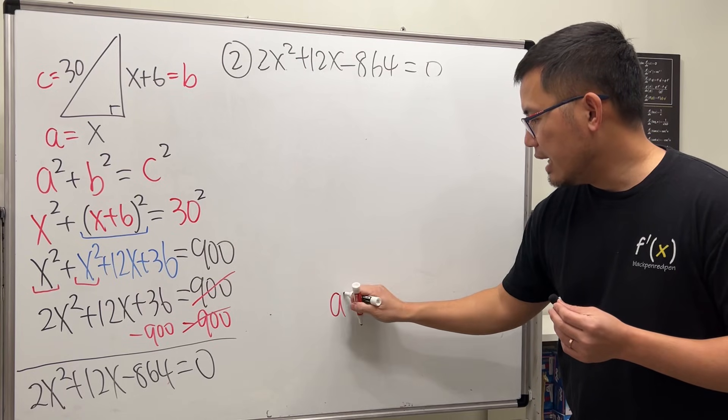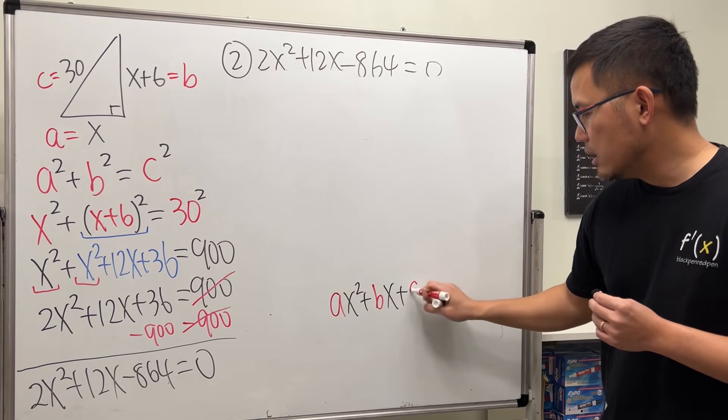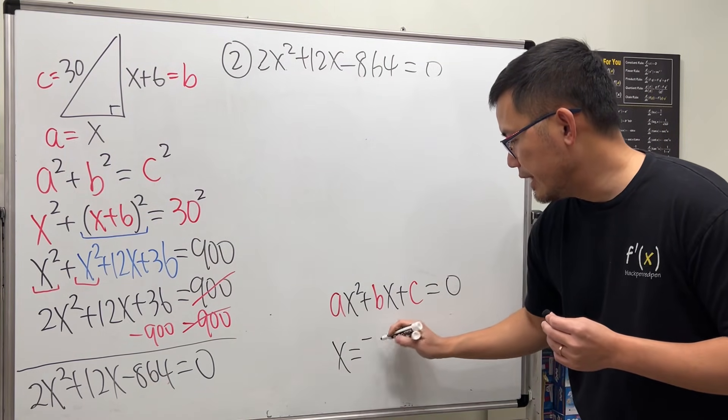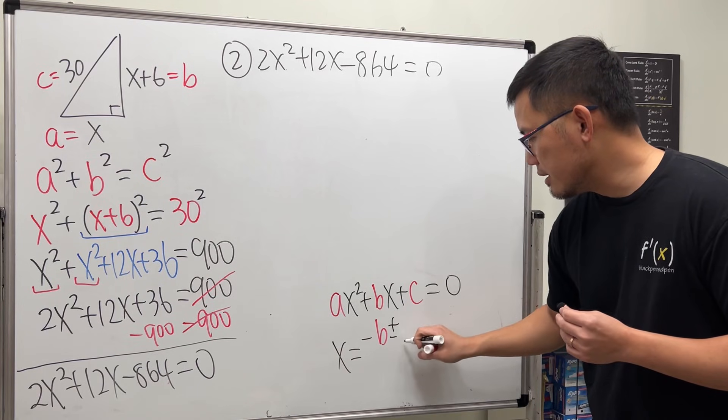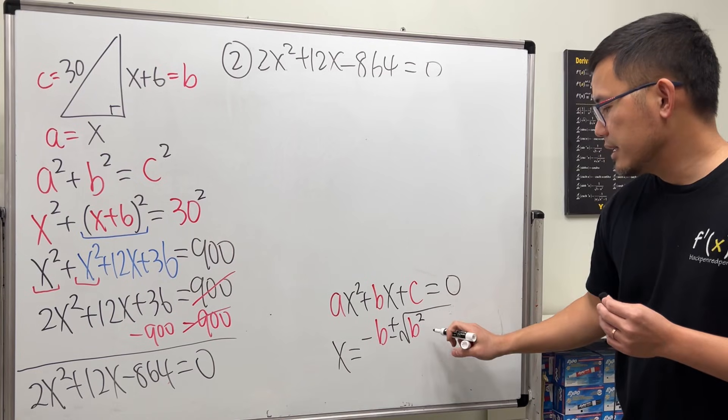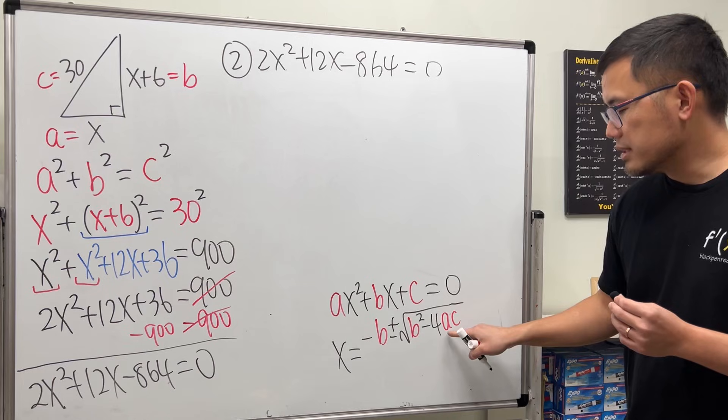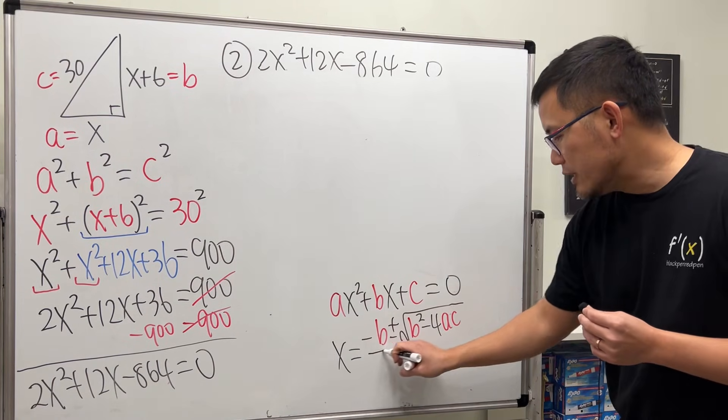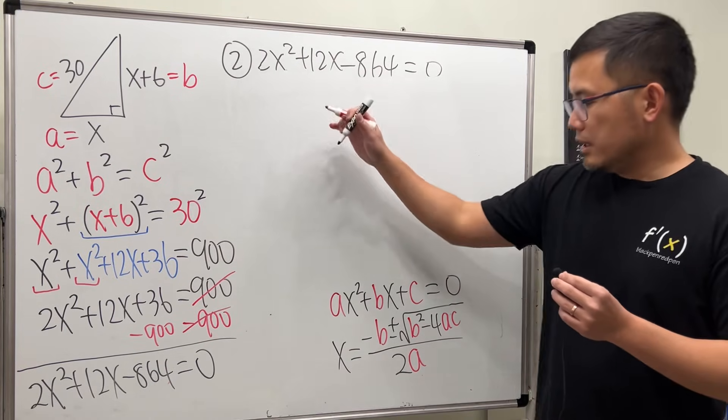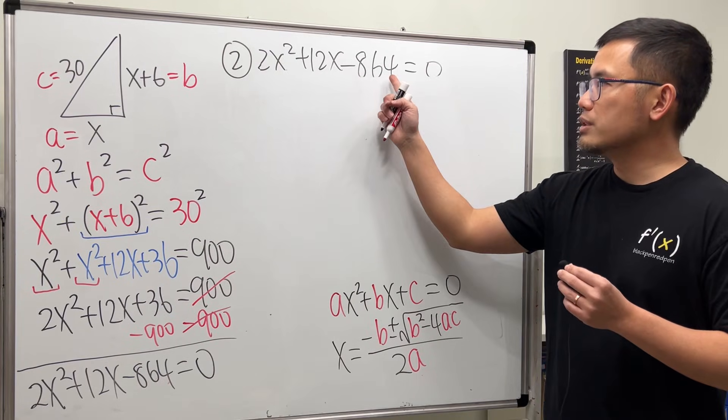if we have ax² + bx + c = 0, then x = (-b ± √(b² - 4ac)) / (2a). These are all inside of the square root. And then all divided by 2 times a. So, right here, yes, we can say a is 2, b is 12, and c is -864. But the numbers are just too big.